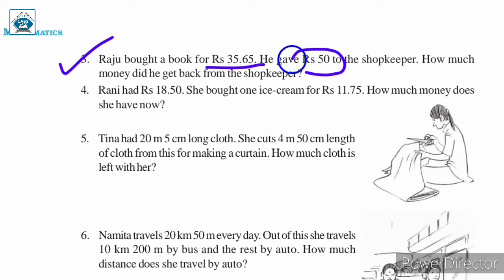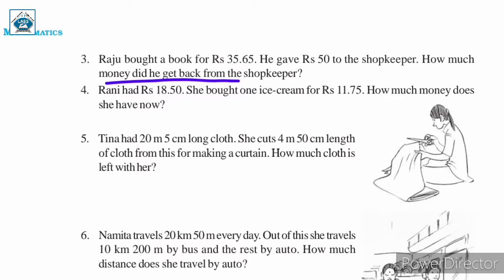Raju gave Rs. 50 to the shopkeeper, but the cost of the book was Rs. 35.65. So the shopkeeper will subtract and give some money back to Raju. What is that money? That is what we are asked — how much money did he get back from the shopkeeper? Let us see the solution.